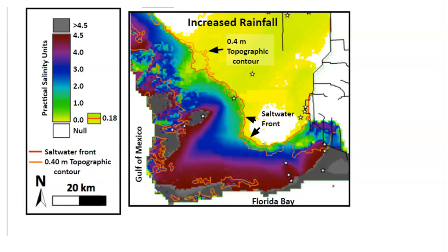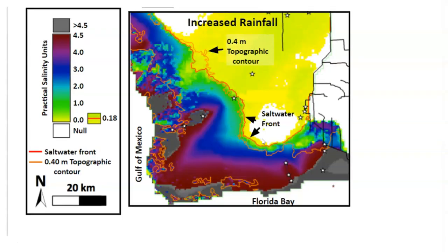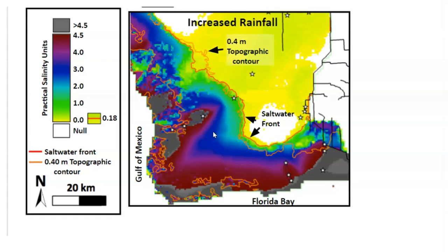In the increased rainfall scenario, the saltwater front is very similar, suggesting that saltwater intrusion is mainly driven by topography and canals, regardless of freshwater flow. But the salinity regime changes much more gradually in the increased rainfall scenario compared to the decreased rainfall scenario. So although increased freshwater availability may have a limited effect on how far inland saltwater intrudes, it can make a big difference in how gradually high salinities are reached, providing more opportunities for adaptation and migration.